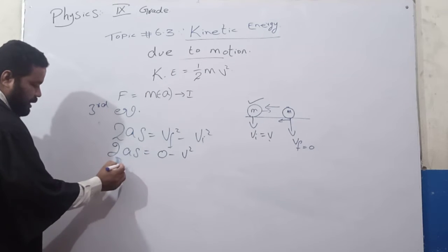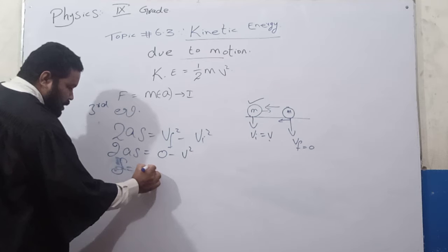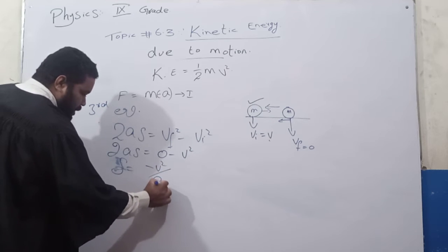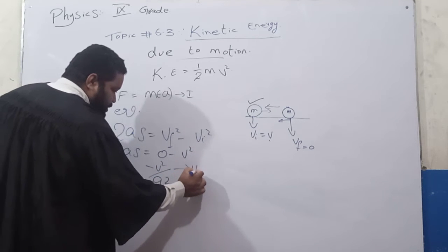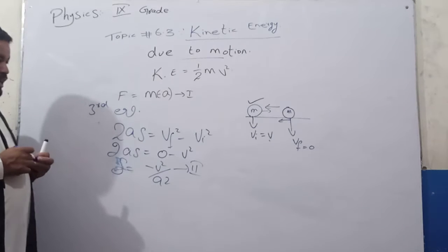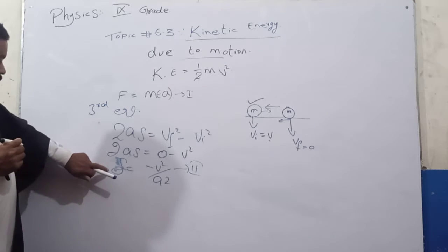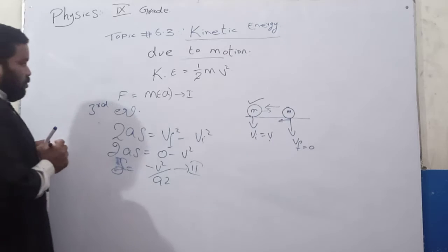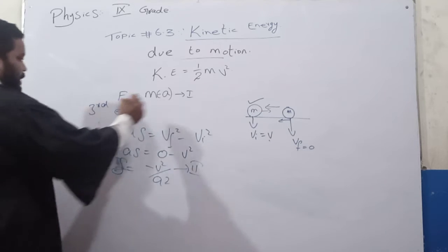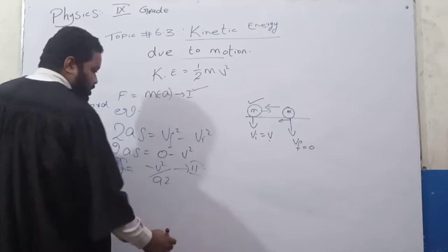So this is s equals to minus v squared by 2a. This is your second equation. This is your first equation and this is your second equation.